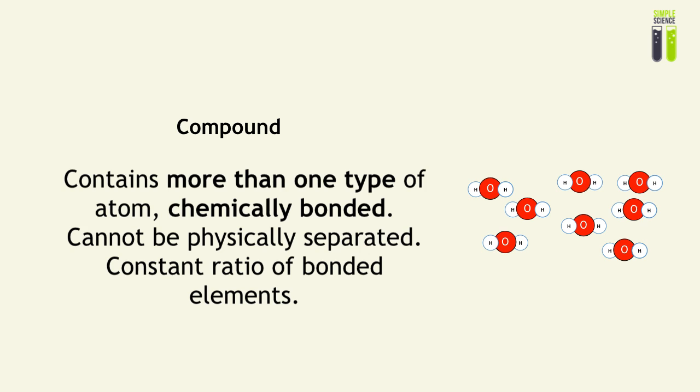Let's look at a compound. So what is a compound? It is basically a chemical bonded structure of more than one type of atom. And the key thing to notice is that it cannot be physically separated. That means it cannot be separated by means such as distillation, fractional distillation, chromatography, dissolving, crystallization, all kinds of stuff.